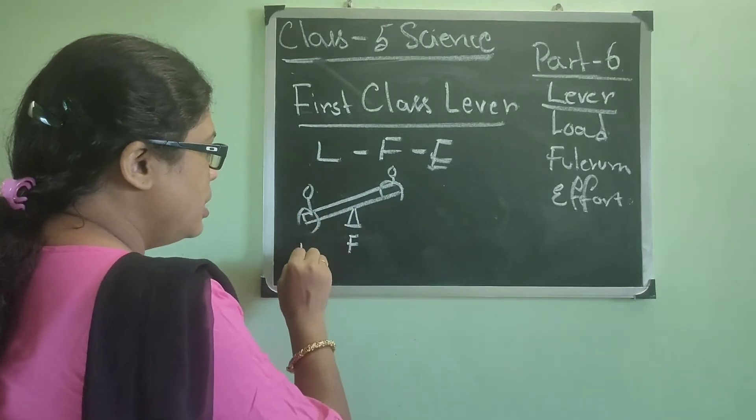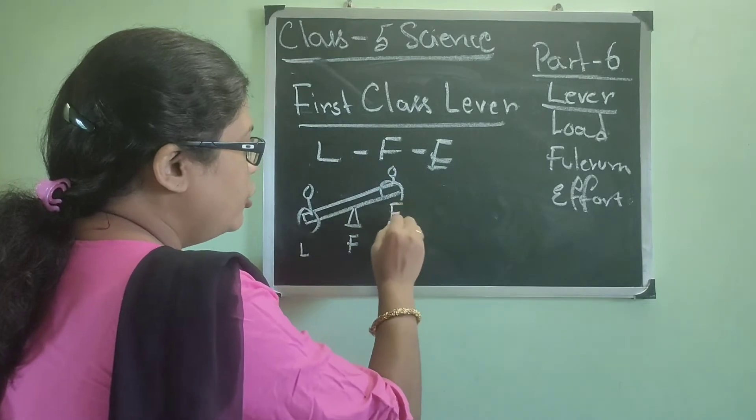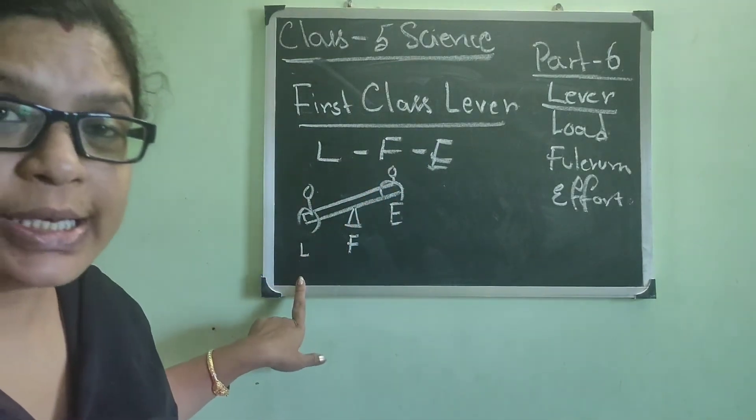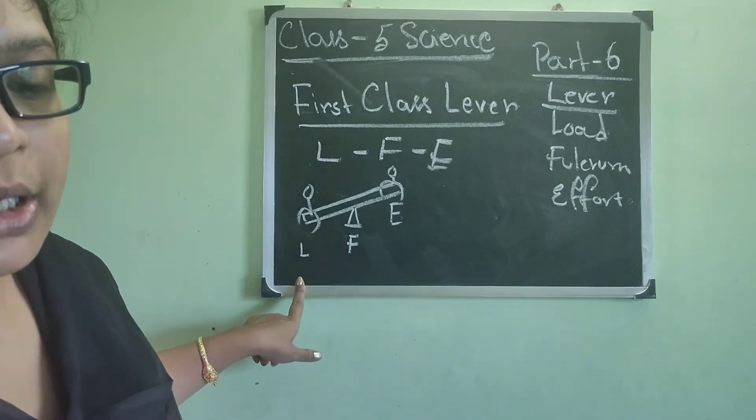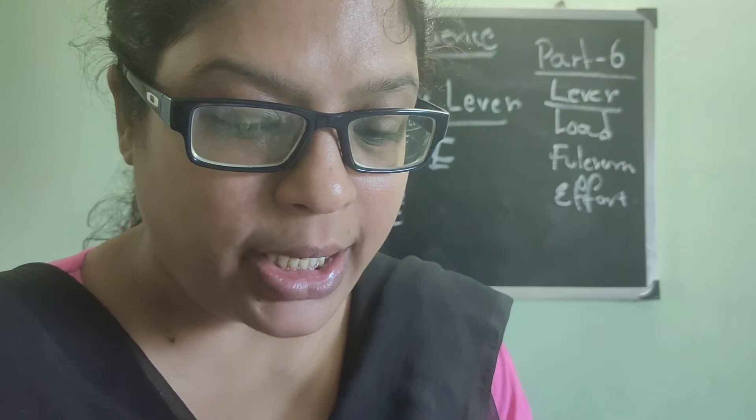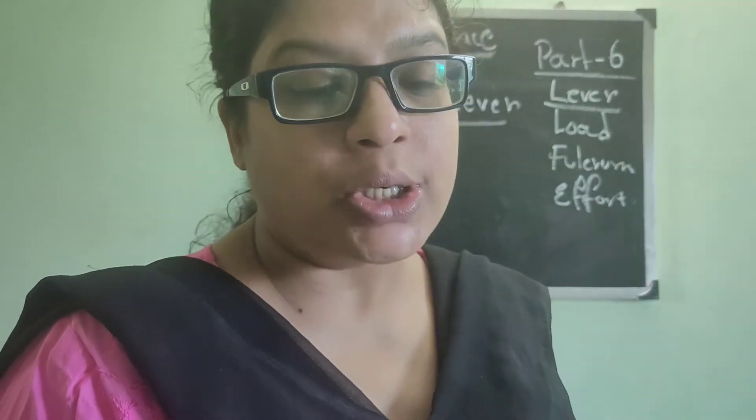Here the load, and finally the girl again will put effort to bring it down. So see, see-saw is a very easy example of the first class lever. See the picture is also provided over here. The see-saw in your school playground is the first class lever.